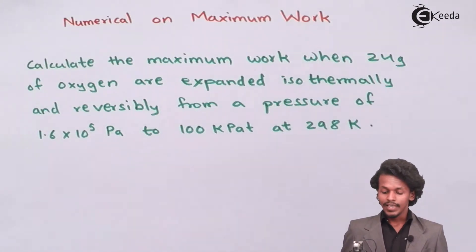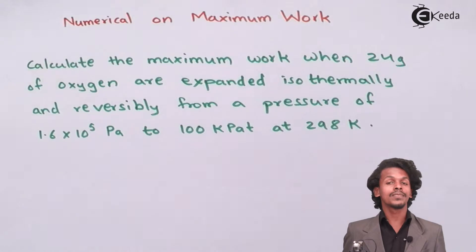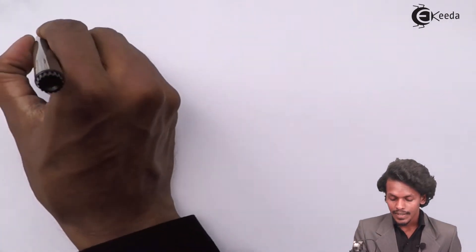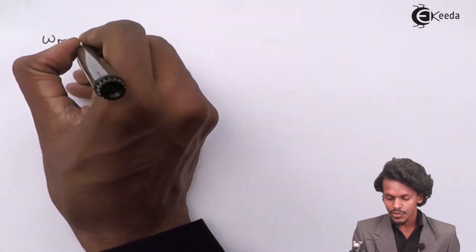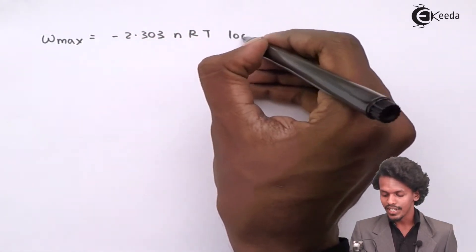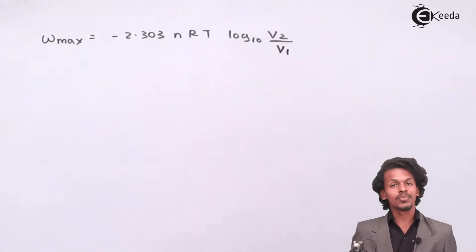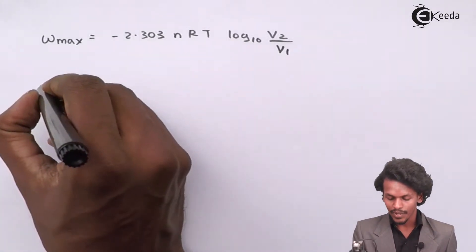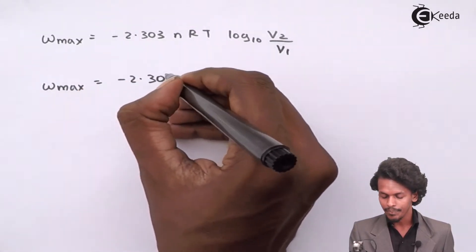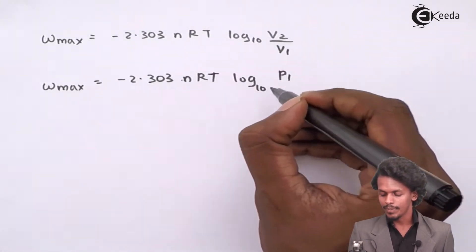In this problem, moles are not directly provided. We know the formula for Wmax: it is Wmax = −2.303 nRT log₁₀(V₂/V₁) when volume is given, and when pressure is given it changes to Wmax = −2.303 nRT log₁₀(P₁/P₂).